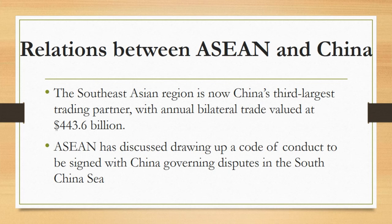The Southeast Asian region is now China's third largest trading partner, with annual bilateral trade valued at 443.6 billion dollars. However, the South China Sea territorial dispute has emerged as a challenge to the unity of the organization. ASEAN has discussed drawing up a code of conduct to be signed with China governing disputes in the South China Sea, but Beijing is reluctant to sign on to a multilateral agreement.